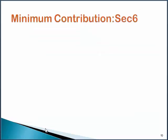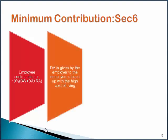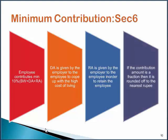A frequently asked question is: what is the minimum contribution under Section 6? Just in four sentences, your entire answer will be complete. Firstly, an employee contributes minimum 10% of Basic Wages plus Dearness Allowance plus Retaining Allowance. Dearness allowance is given by the employer to the employee just to cope up with a high cost of living. Retaining allowance is given by the employer to the employee in order to retain the employee. And lastly, please remember that if the contribution amount is a fraction, then it should be rounded off to the nearest rupee.